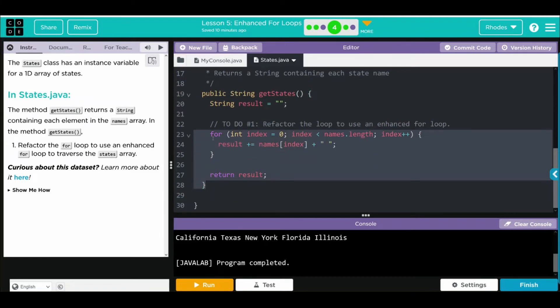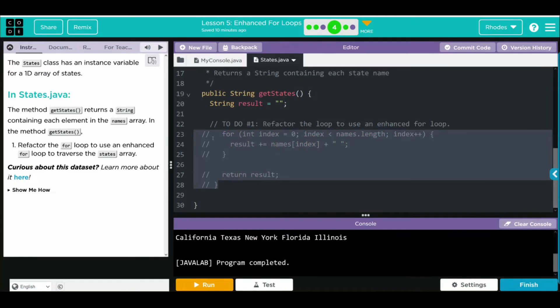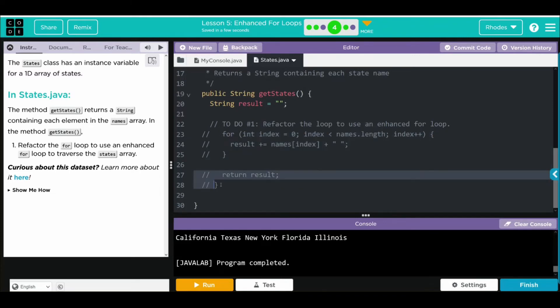Well, let's comment this out. Remember, control question mark mass comments. Looks like we're commenting out a little too much. We only want to comment out our for loop. You can come down here, hit control question mark, return that. Let's write our enhanced for loop.